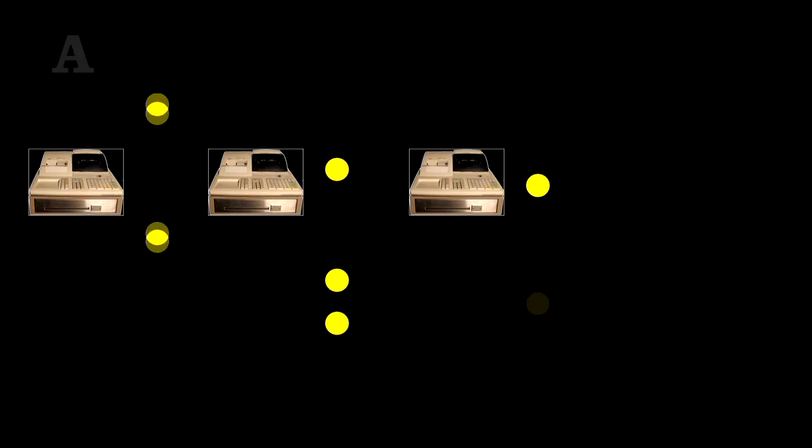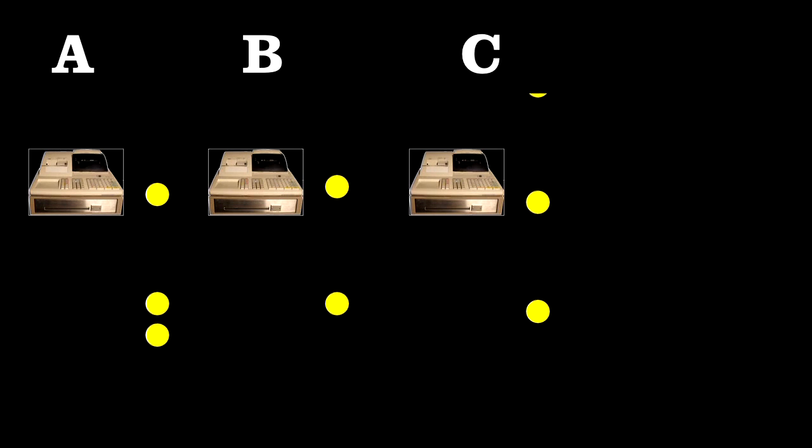This also explains why other lines always move faster than your line, or at least why they seem to move faster. Picture yourself in a line with a line on each side. We'll label them A, B, and C, and assume you are in line B.